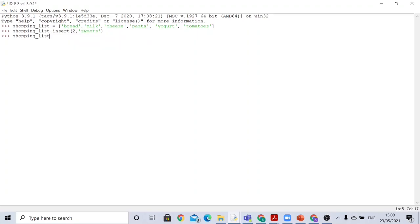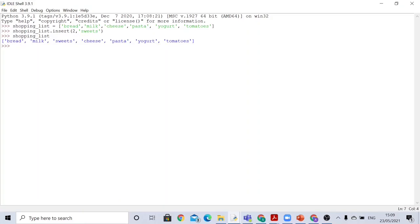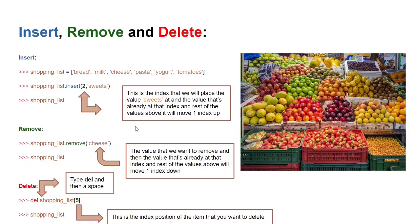Pressing enter prints the list with one extra value. We've inserted sweets at index position 2, so cheese moves to index 3 and the rest of the values shift up accordingly. Now let's move on to remove. We type the variable's name 'shopping_list' then dot remove with the value cheese inside it. Everything above cheese would then move one index down instead of up.